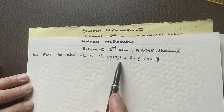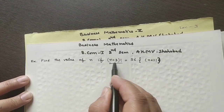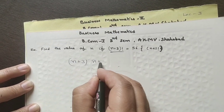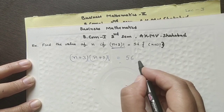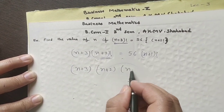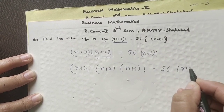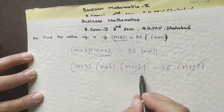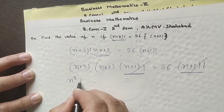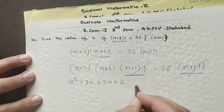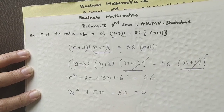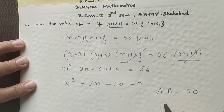The next question is to find the value of n for (n plus 3)! equals 56 times (n plus 1)!. Applying the formula: (n plus 3)! equals (n plus 3) into (n plus 2) into (n plus 1)!. Substituting and cancelling (n plus 1)! from both sides gives (n plus 3)(n plus 2) equals 56.